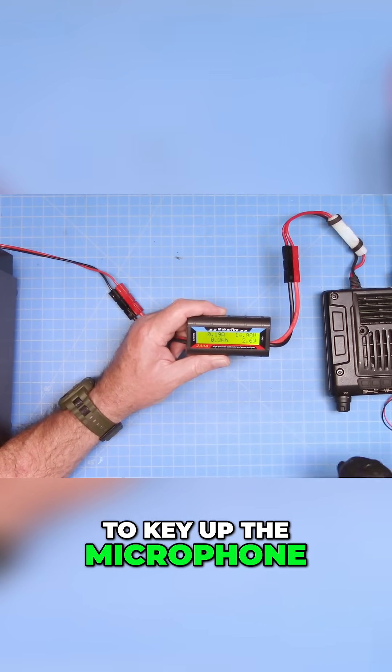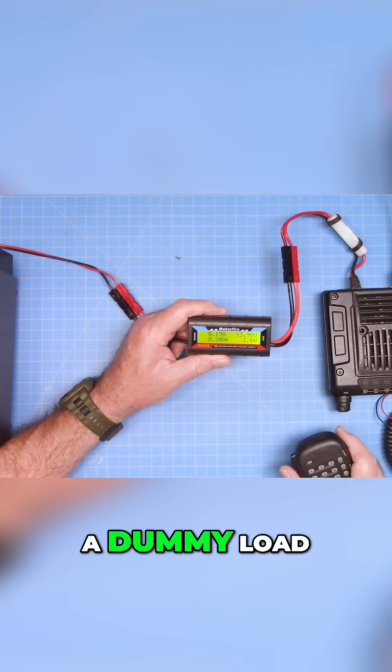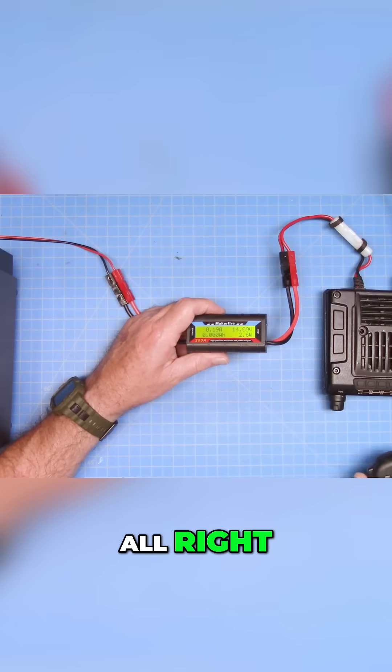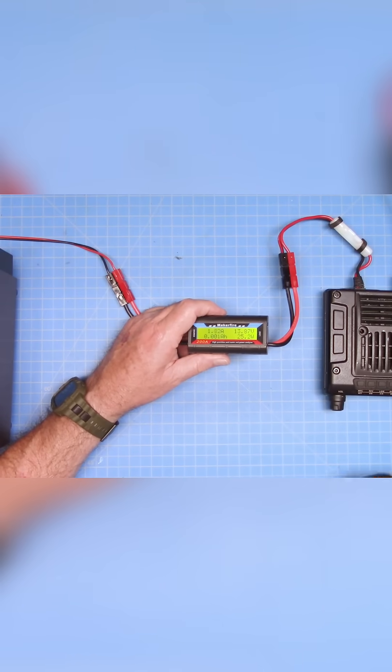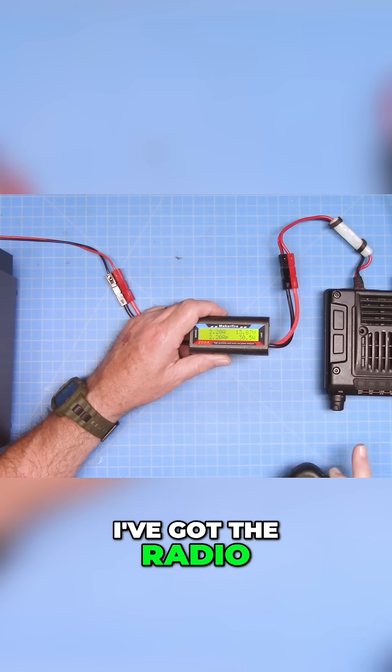So now I'm going to key up the microphone. I am on FM going into a dummy load. Alright, key up. And now we're drawing power and you can see we're pulling 2.9 amps. I've got the radio set to low power.